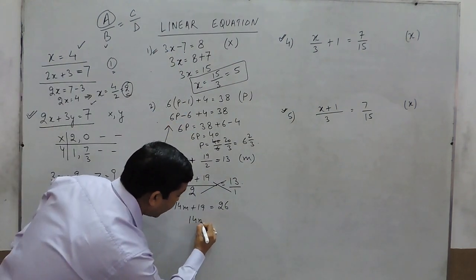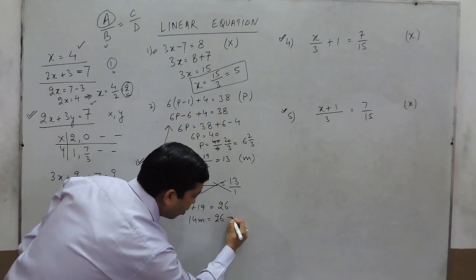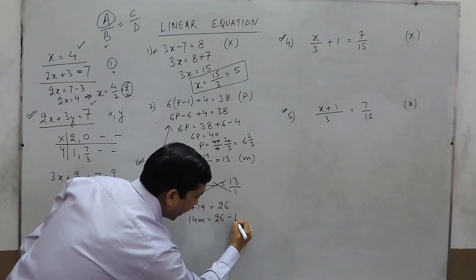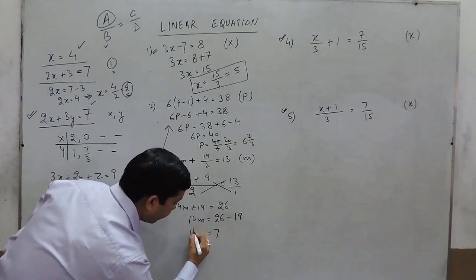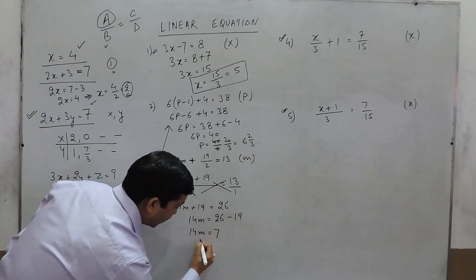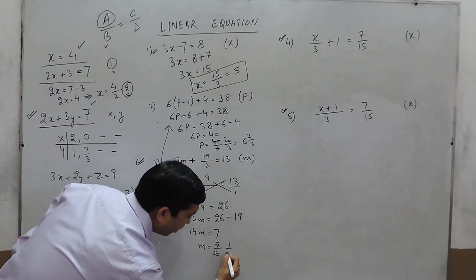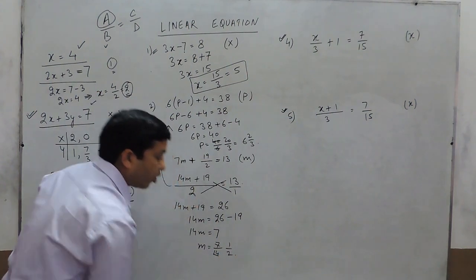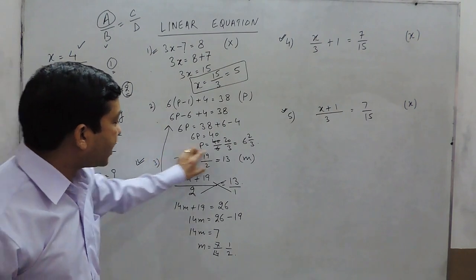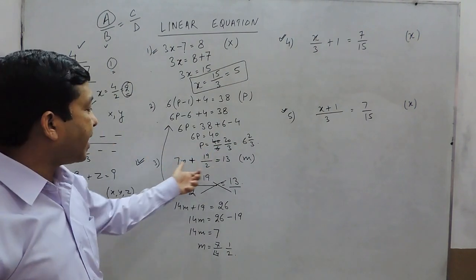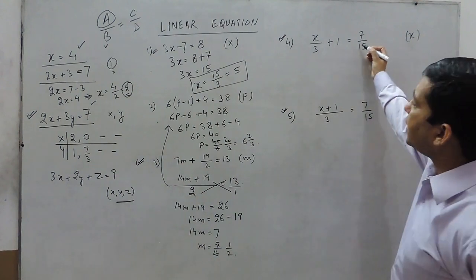So 14m equals 26 minus 19, which gives 7. The value of m comes out to be 7 upon 14, or 1 upon 2. For the value of m equal to 1 upon 2, the left hand side and right hand side of the equation are equal.